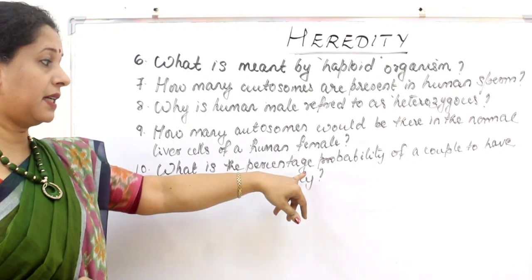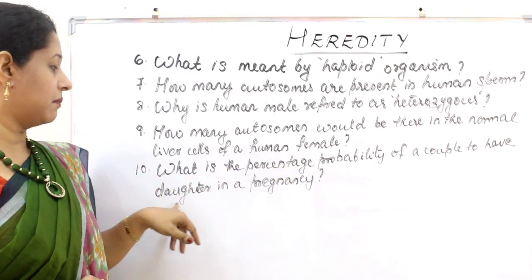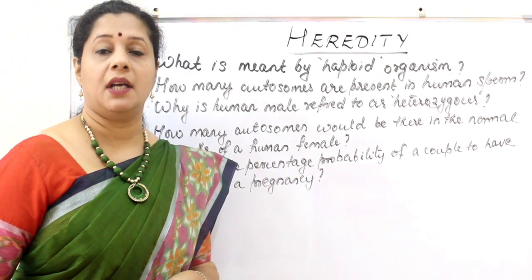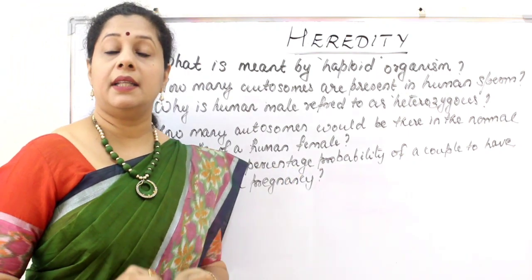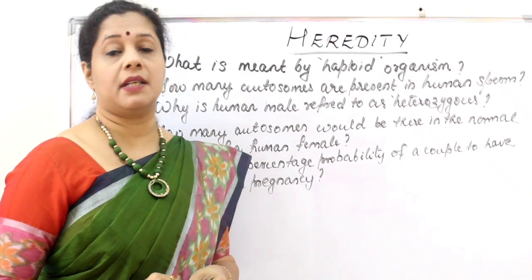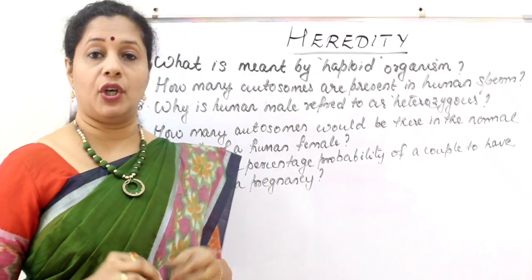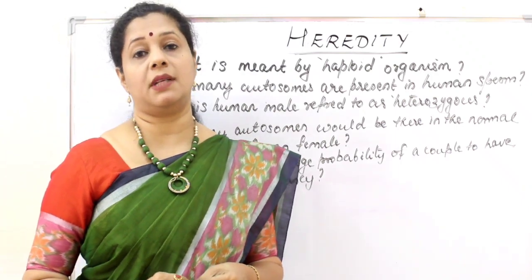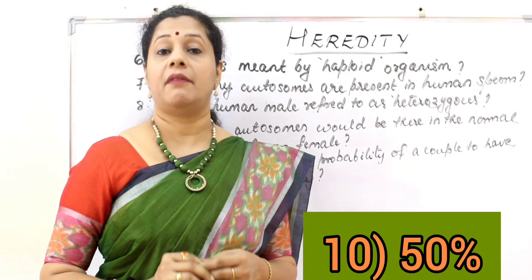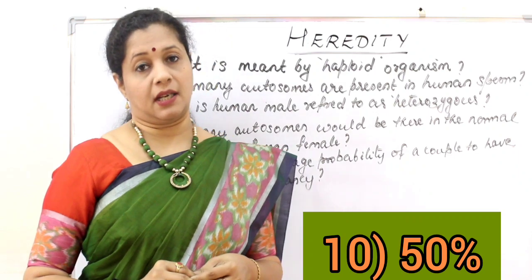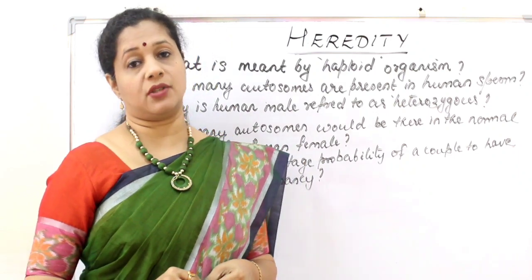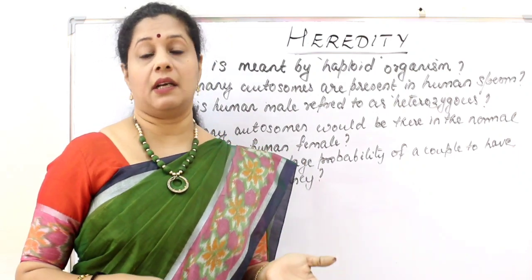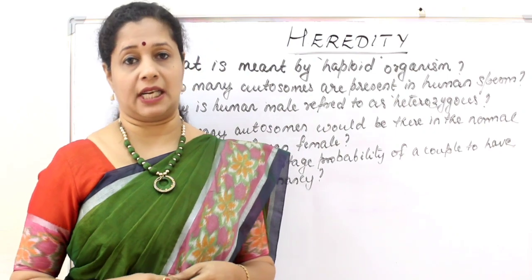What is the percentage probability of a couple having a daughter in a pregnancy? In any case, the probability of having a daughter or a son is equal — 50%. It is a 1 to 1 ratio of getting a female child.